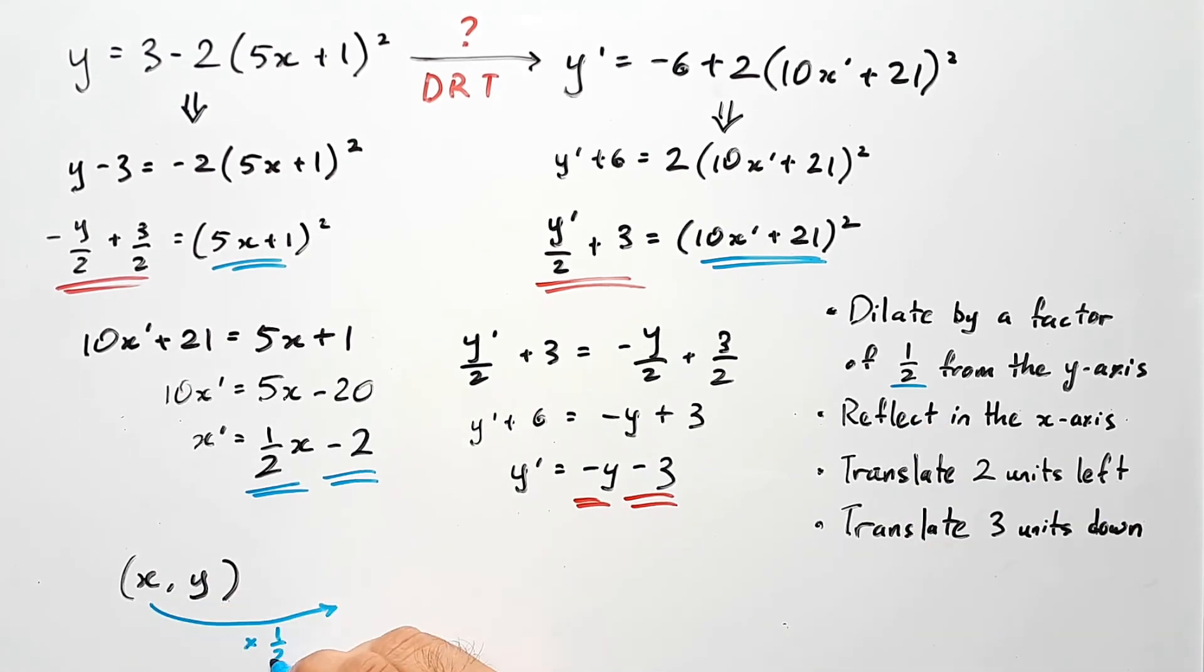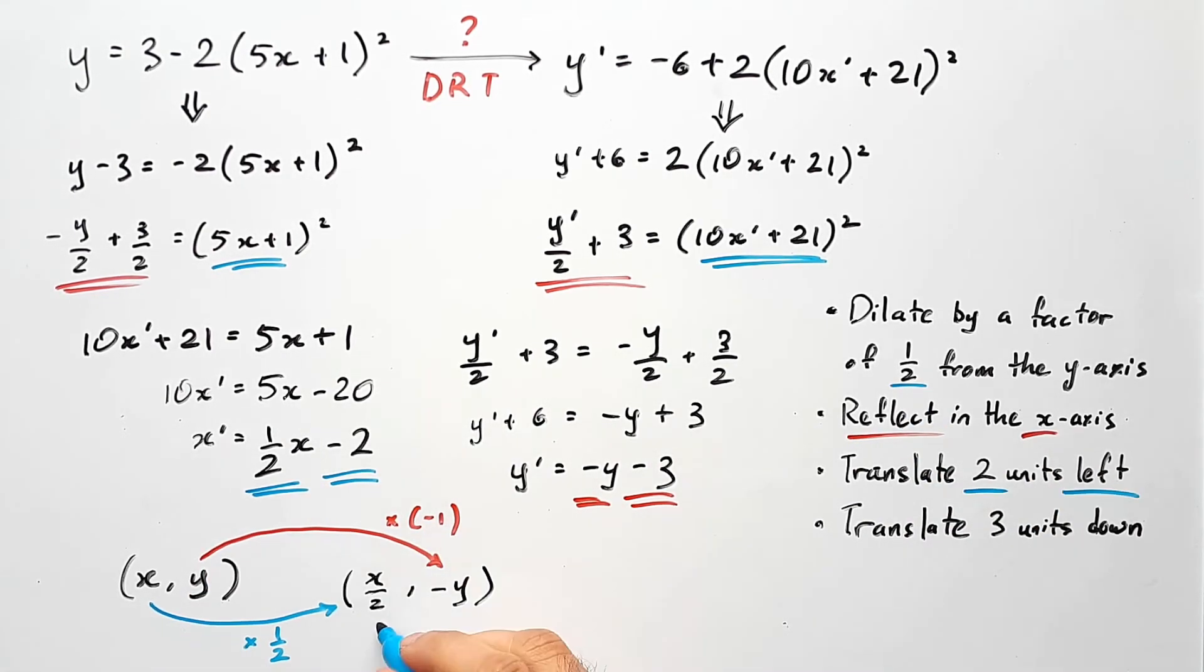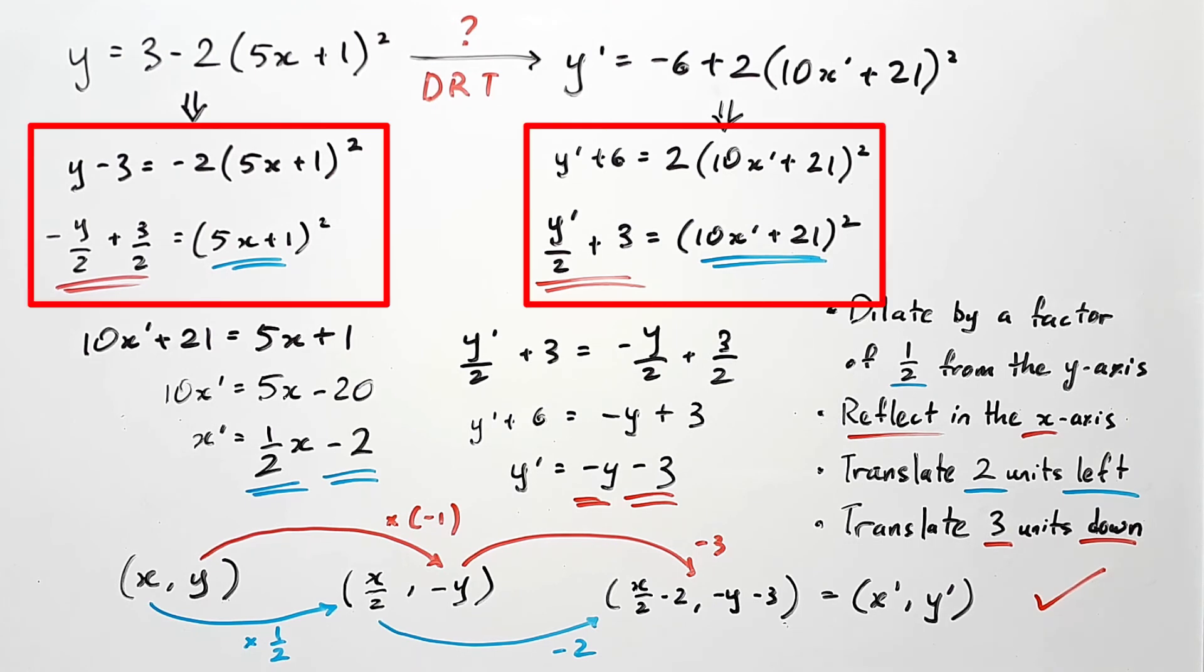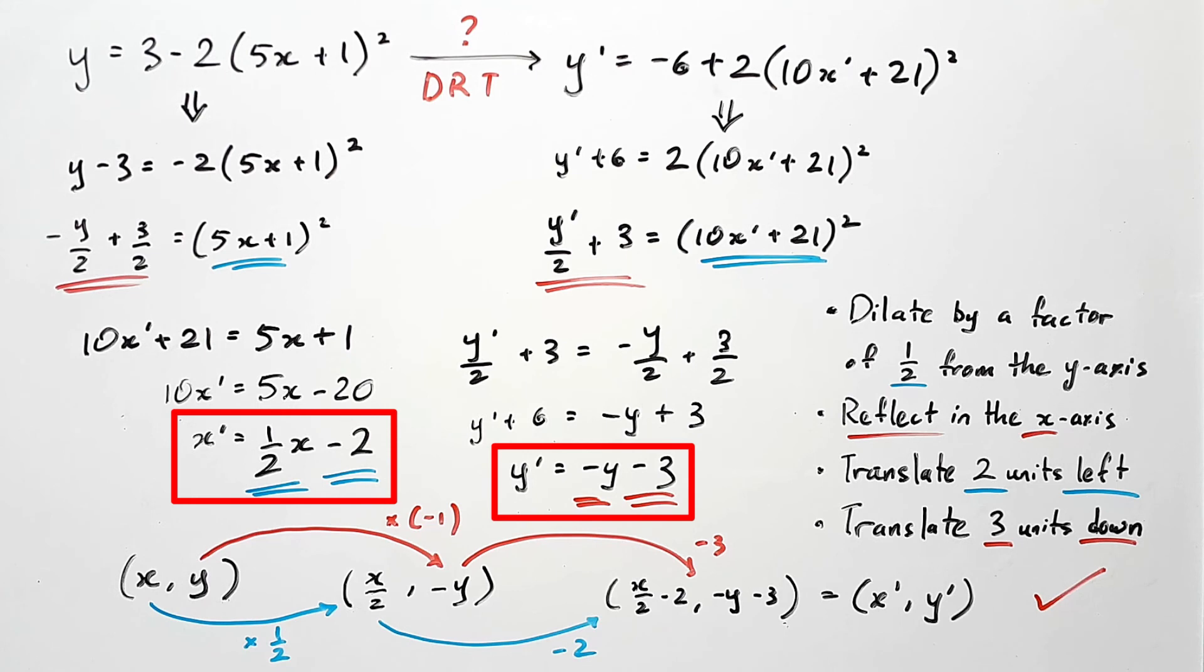Once again, if you want to verify this, just start off with x comma y as your coordinate, and do a map based on the sequence you've just written. It looks like it's the same thing, so the answer is correct. And that's all there is to it. Basically, you want to start from both ends of the question and work your way towards the middle to figure out what the transformations are.